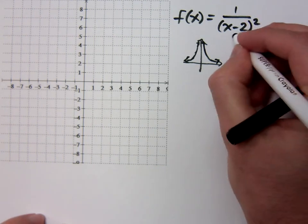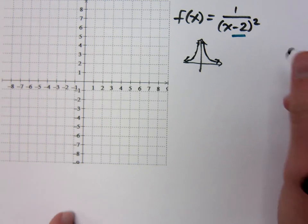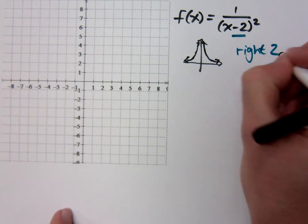Remember, with those translations that we see, I see a negative 2 inside the reciprocal squaring function, which means I do the opposite, so I will go to the right 2.